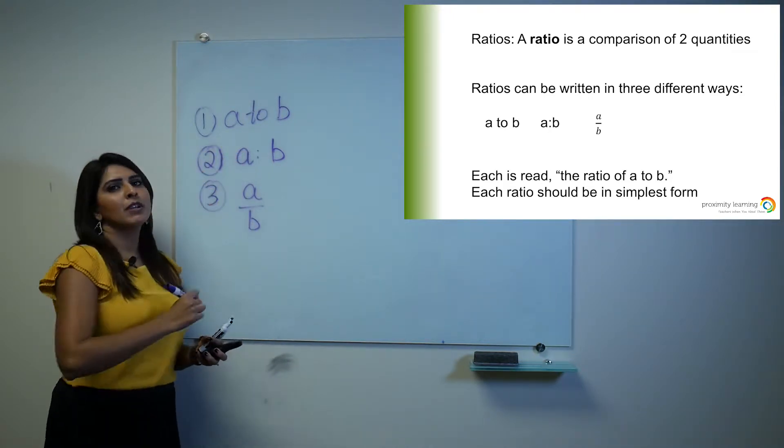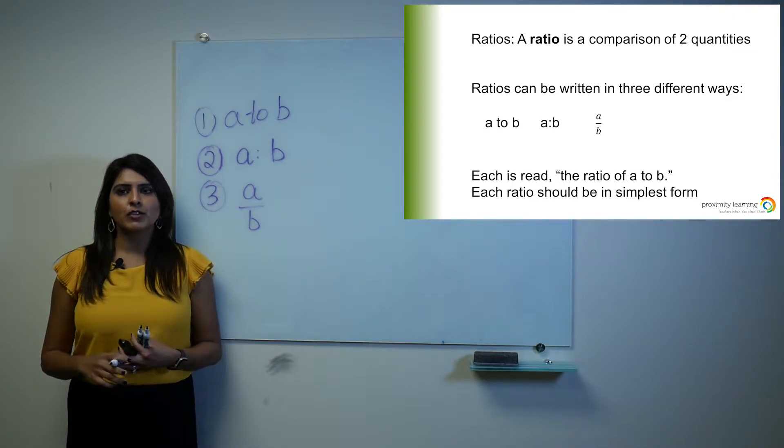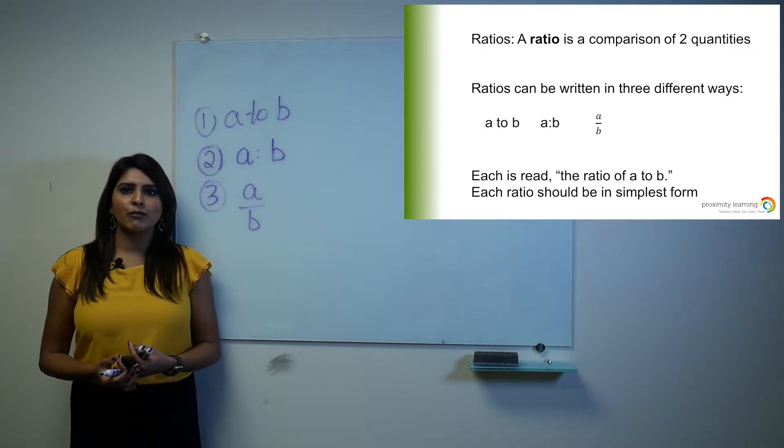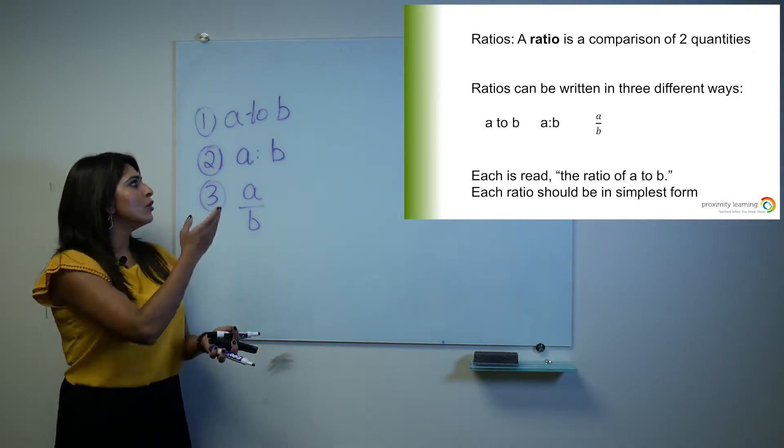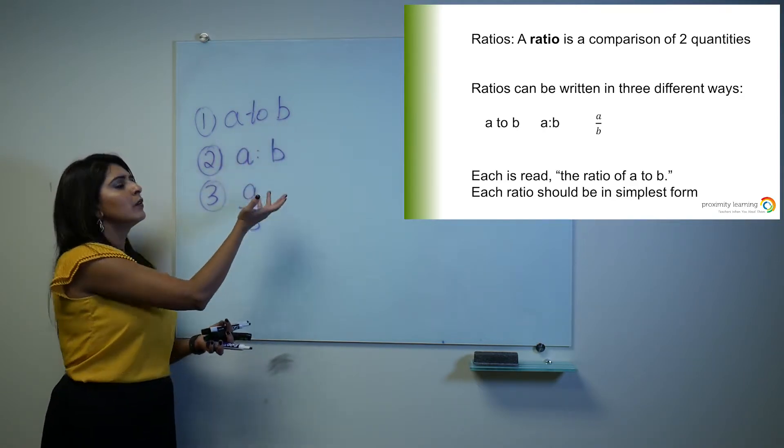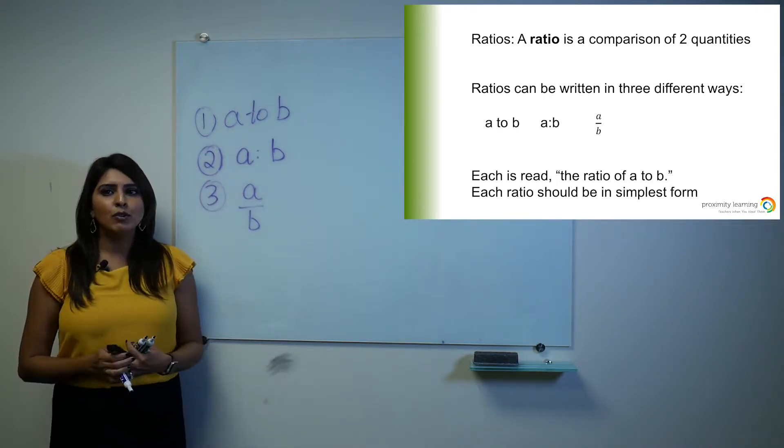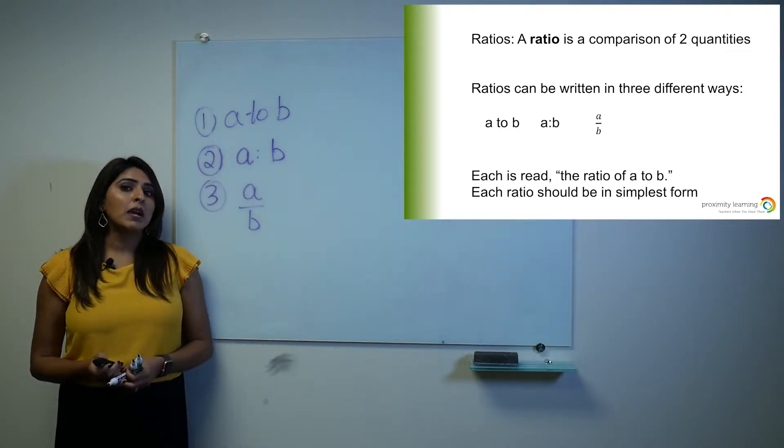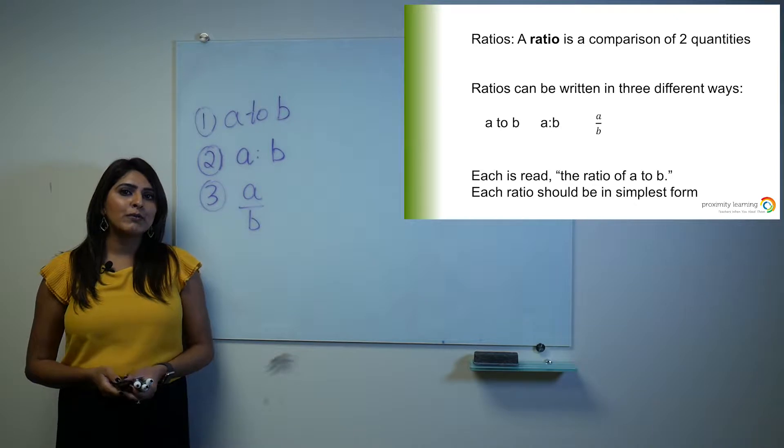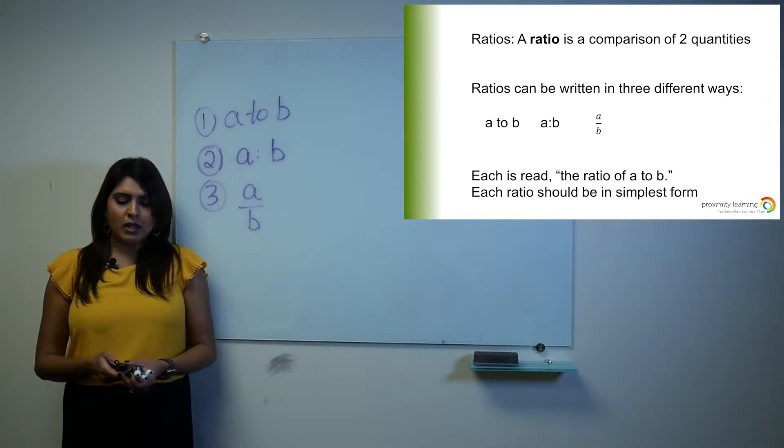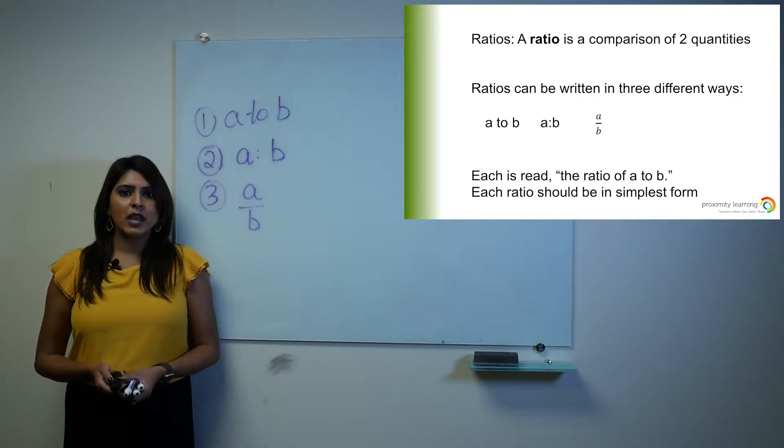Also, up above on this screen, you will see the definition of a ratio. A ratio is a comparison of two quantities. So you are comparing A to B, which is two different quantities. All of these are read as A to B. Also keep in mind that ratios should always be written in simplest form, which is something we will discuss towards the end of this lesson.